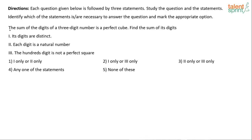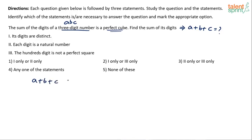So here's the question on data sufficiency. The question statement is: the sum of the digits of a three-digit number is a perfect cube. Find the sum of its digits. Let's assume the three-digit number is a, b, c. He says find the sum of its digits, meaning what is a plus b plus c? The point given in the question is that a plus b plus c is a perfect cube.